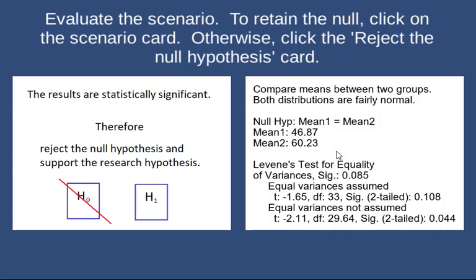In the next scenario we again have a two-tail test. The null hypothesis says the mean for group 1 equals the mean for group 2. Group 1 mean is 46.87 and group 2 mean is 60.23. Levene's test significance is 0.085, which is larger than 0.05, so we can assume equality of variances and use the upper row. The t-test is negative 1.65, degrees of freedom is 33, and significance two-tail is 0.108. That's larger than 0.05, so we are retaining the null hypothesis.